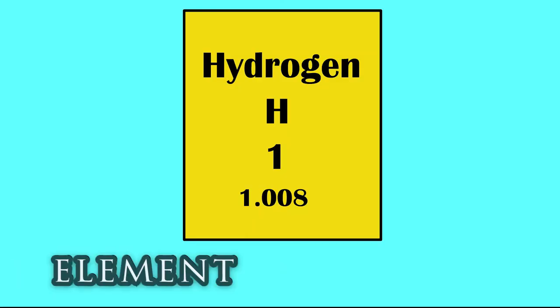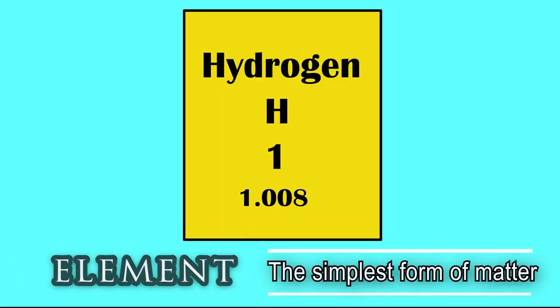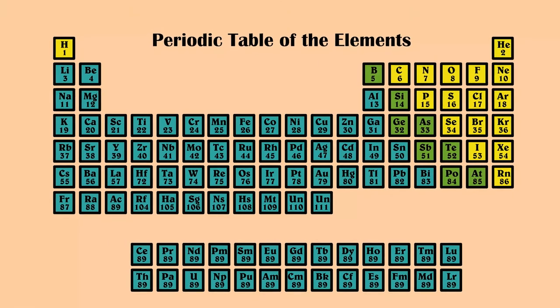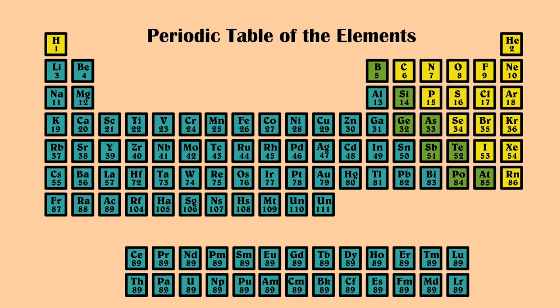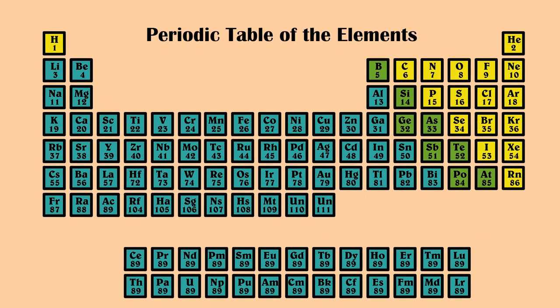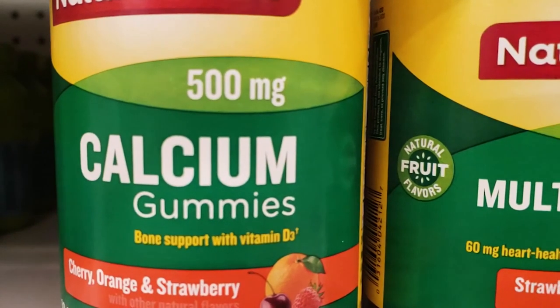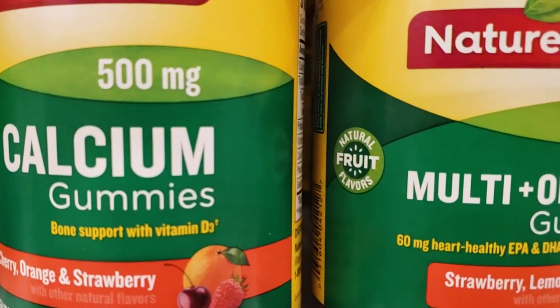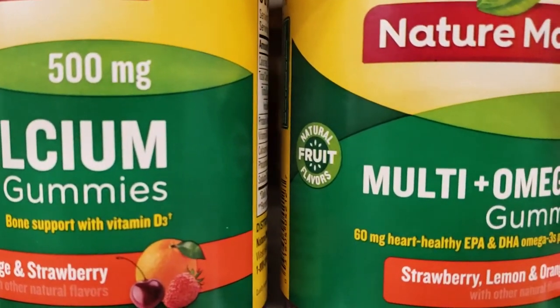An element is the simplest form of matter. It can't be broken down by normal chemical means. There are about 92 naturally occurring elements, and they're all listed on the periodic table of elements. Some elements are more important to living things than others — some you can't live without, some you only need trace amounts, and other elements are just harmful to living things. So what are the top 10 most important elements for living things?